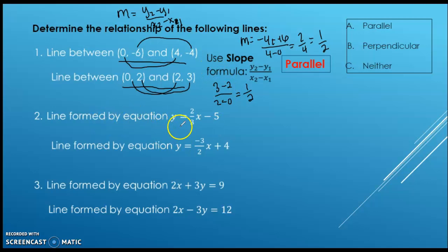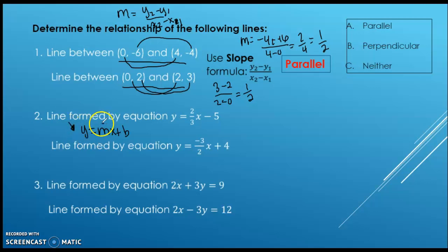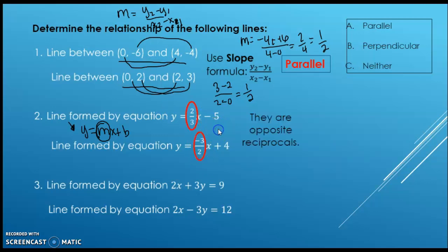This next pair is a line formed by y equals two-thirds x minus 5, and a line formed by y equals negative three-halves x plus 4. These are in slope-intercept form, y equals mx plus b. The only time you can get the slope from an equation is when y is solved for — all by itself. Your slope is always the number in front of x. The slope here is two-thirds, the slope here is negative three-halves — they are opposite reciprocals: positive, negative, flip the fraction. Therefore they're perpendicular.